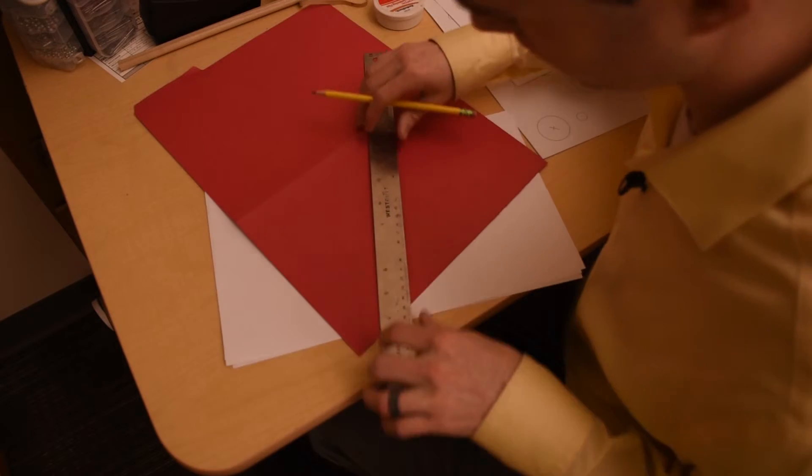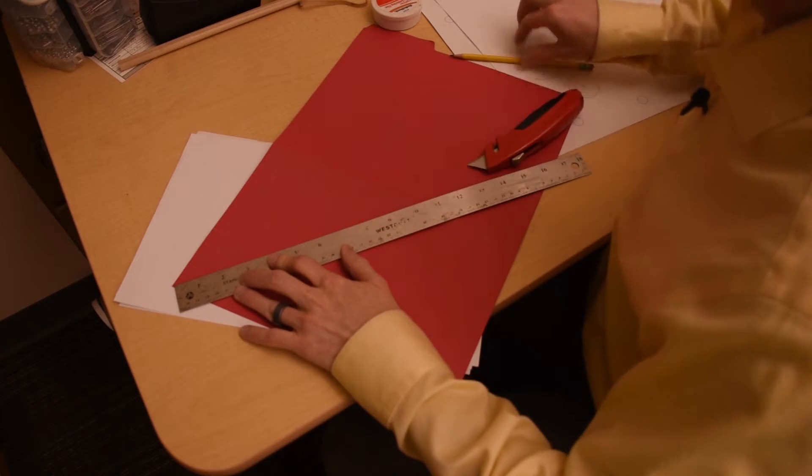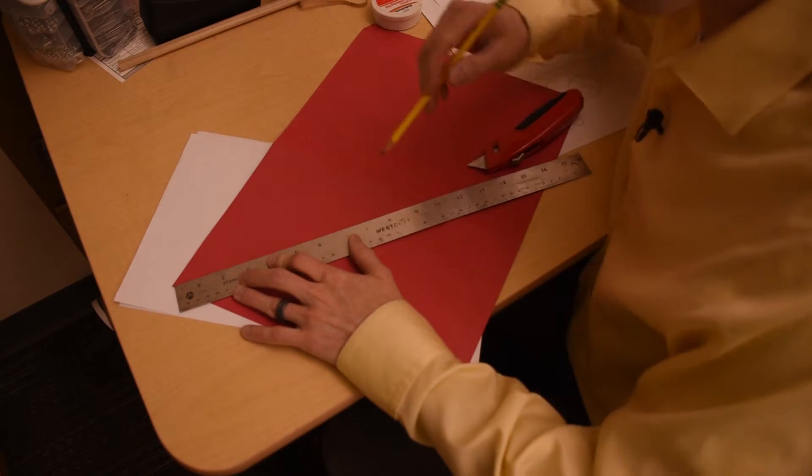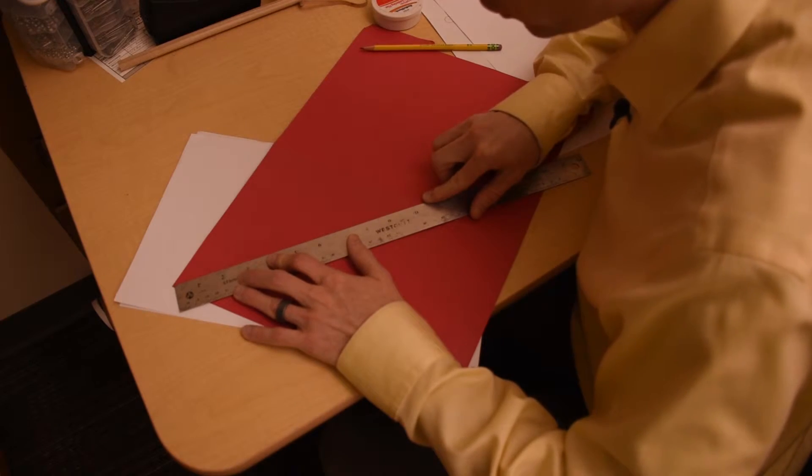Alright, all the marks are made, now it's time to cut. You need to make sure that you offset this cut such that whenever you go to draw a line down the middle of your circular item, the pencil line is dead center.